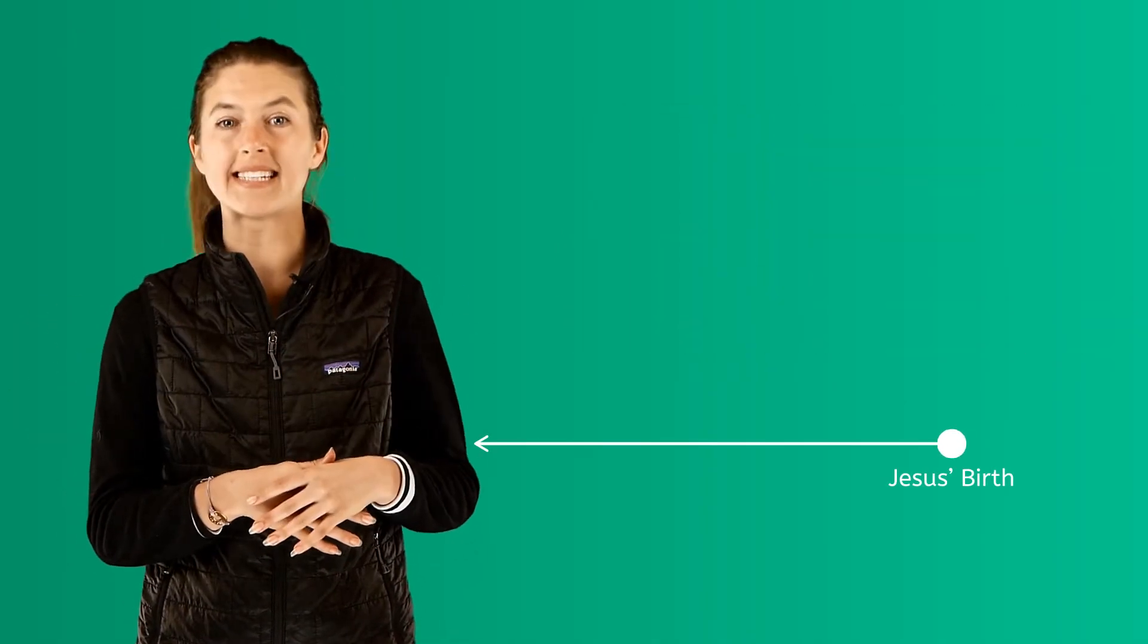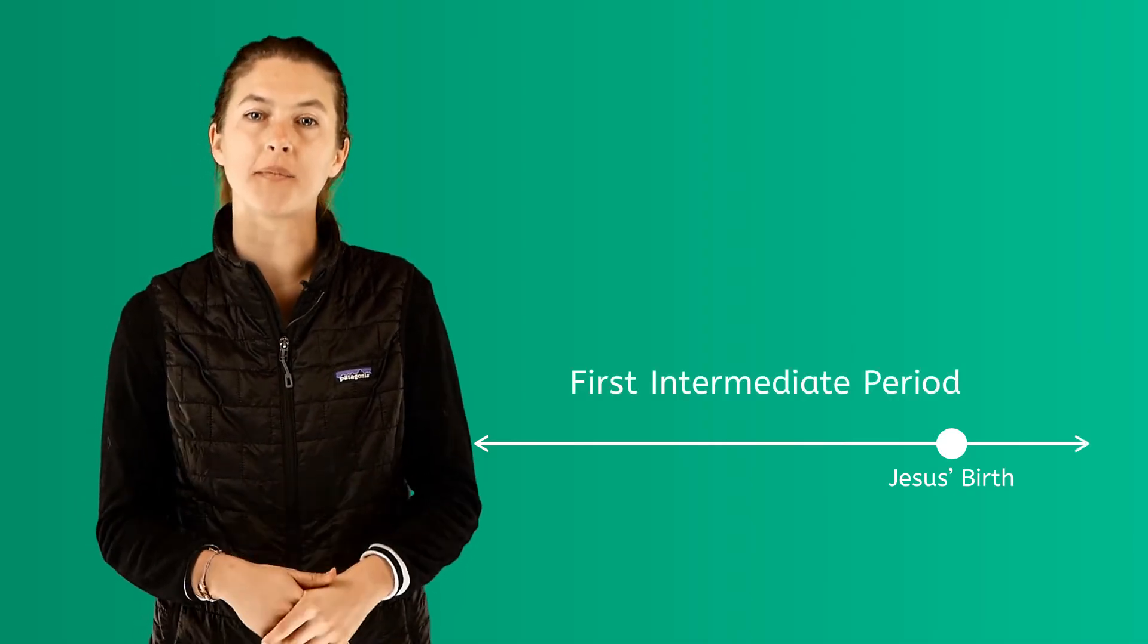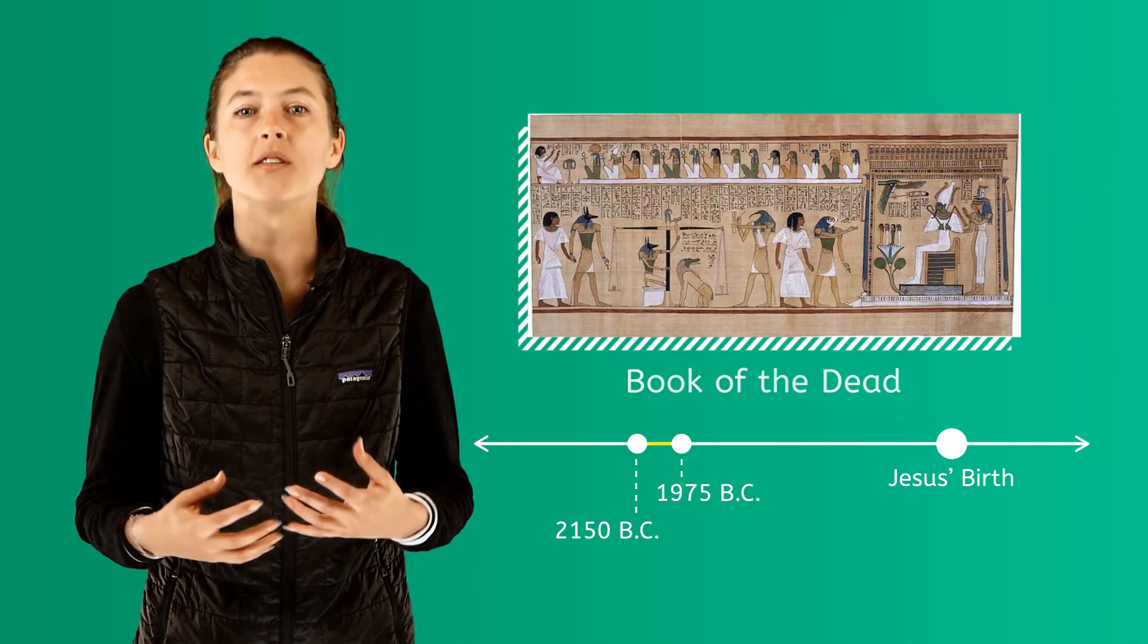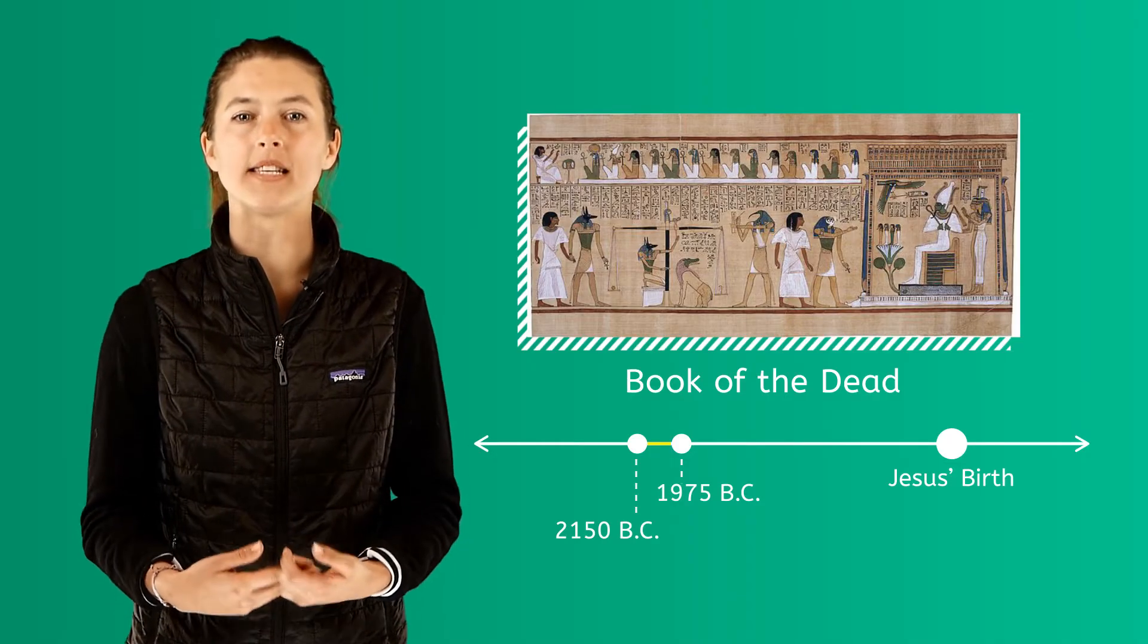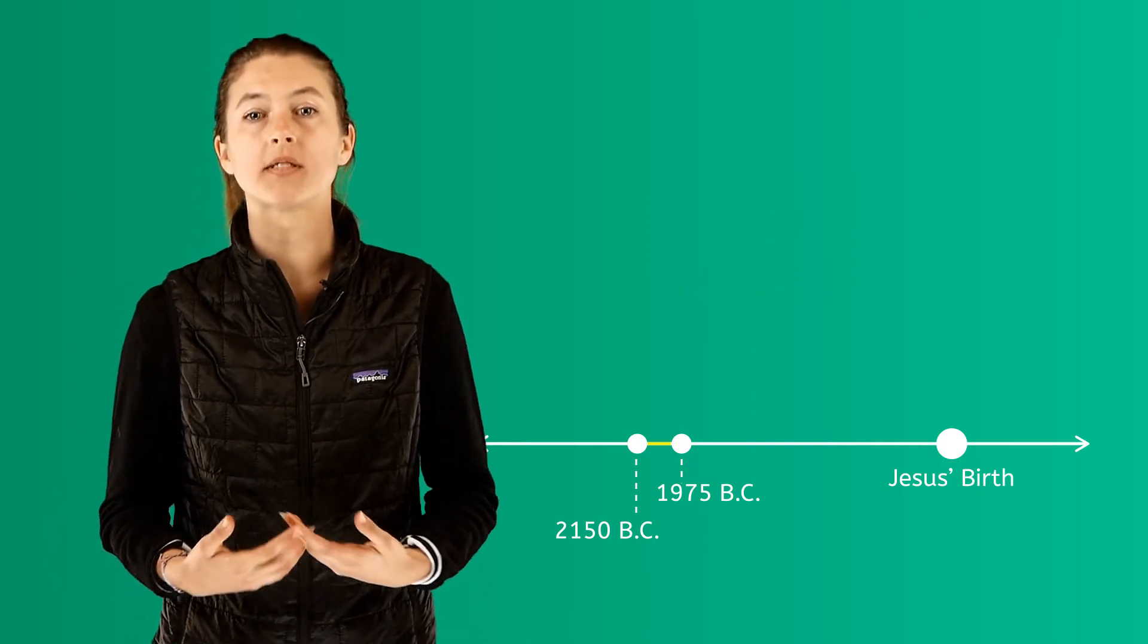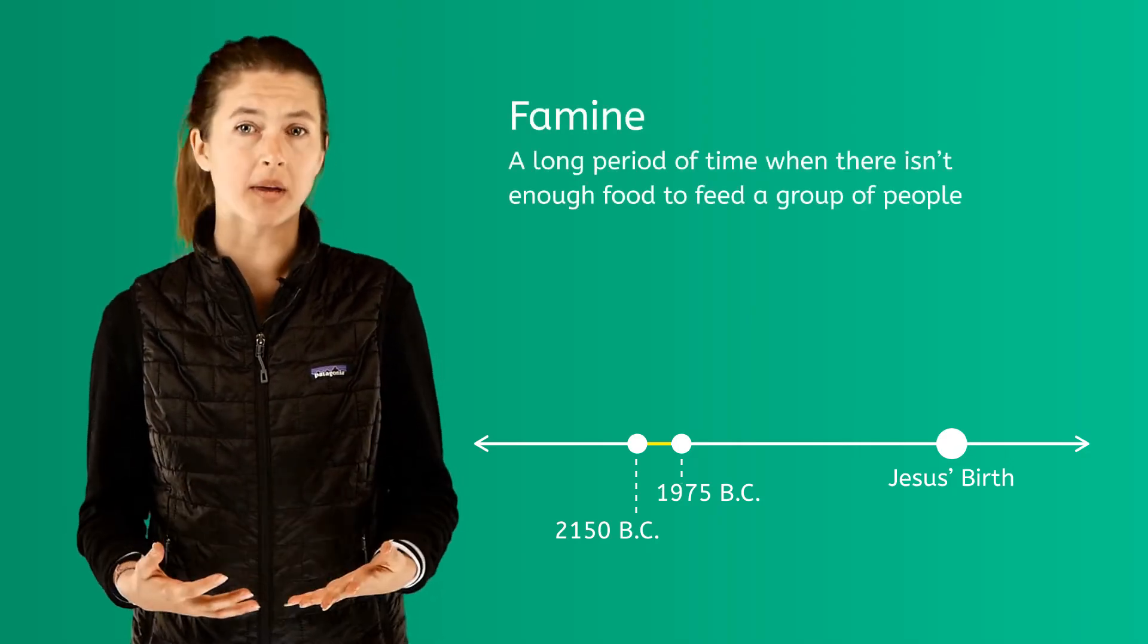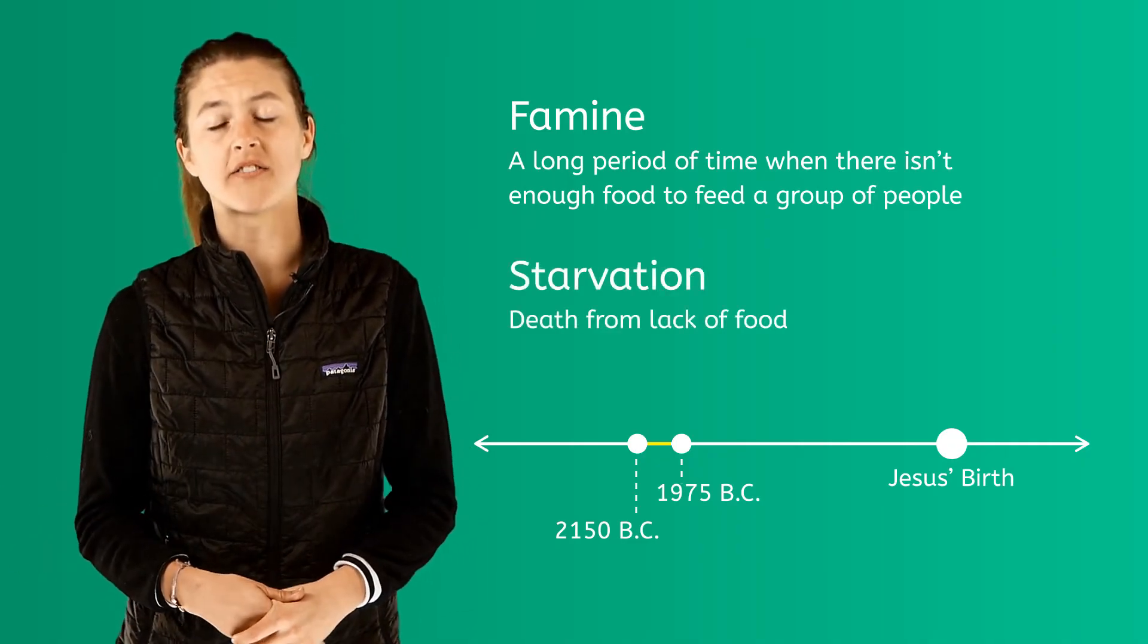After the Old Kingdom ended, rebellions against the pharaohs began. This marked the First Intermediate Period, which lasted from 2150 BC to 1975 BC. The Egyptian Book of the Dead was written, which was a religious text that was thought to help the dead find their way to the afterlife. During this time period, Egypt suffered a horrible drought which caused great suffering and many deaths. The drought caused famine, which is when there is not enough food to feed an area's population, causing starvation.